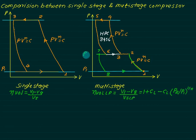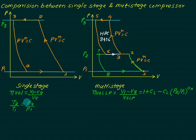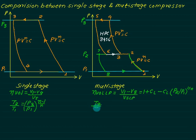Where P2 is the intermediate pressure and P3 is the delivery pressure. The temperature rise for the single stage is T2/T1 = (P3/P1)^((n−1)/n). For the multi-stage with perfect intercooling, T2 equals T4, and the temperature ratio for each stage is T2/T1 = (P2/P1)^((n−1)/n).